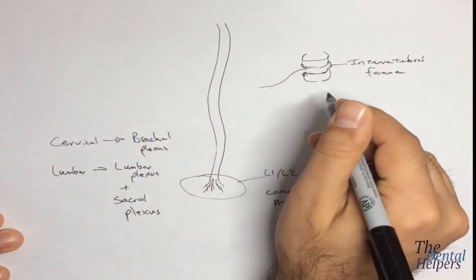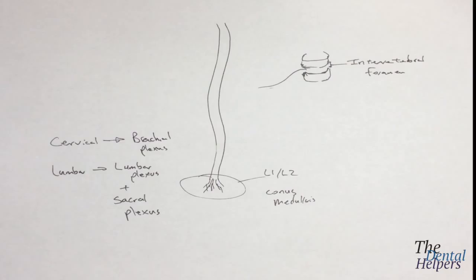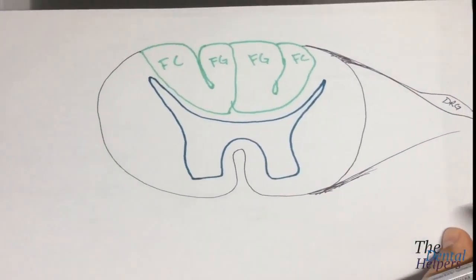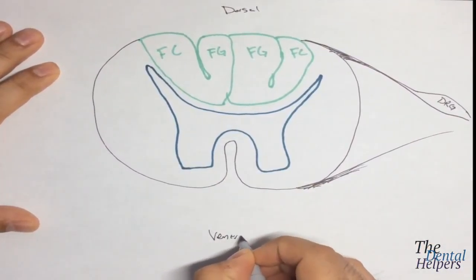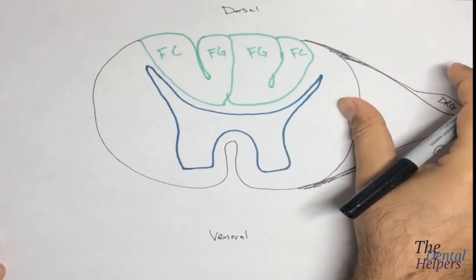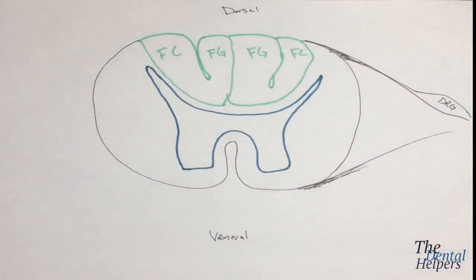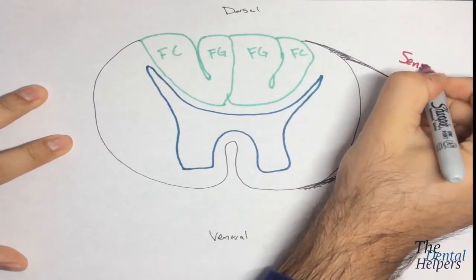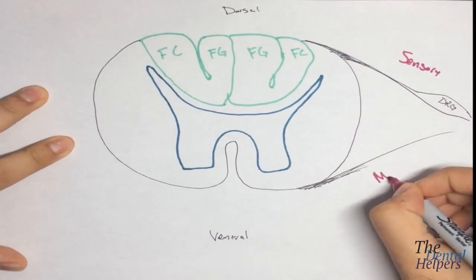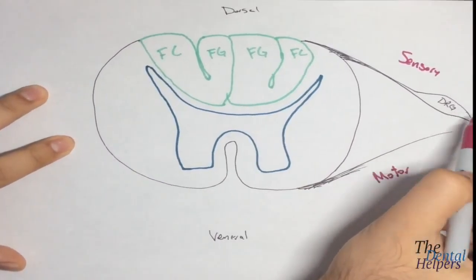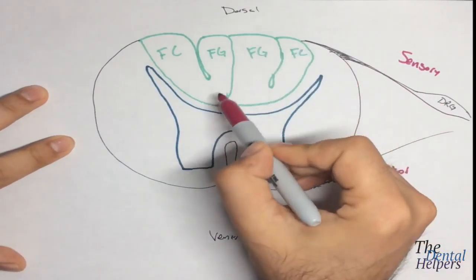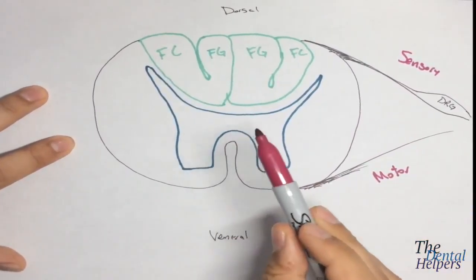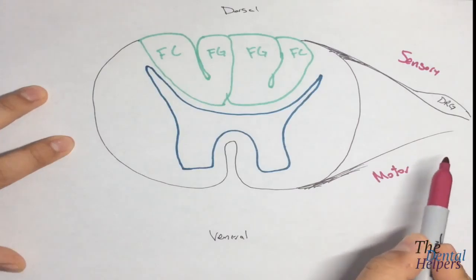If fibers are coming out of the dorsal end, that's going to be sensory, so this side is sensory. If we're coming out of the ventral half, this is going to be motor. So if sensation is coming up, it's going to come up through the dorsal half, be integrated through the spinal cord and ultimately the brain, and then the signal is going to come back down and go out the ventral half through the motor complex.